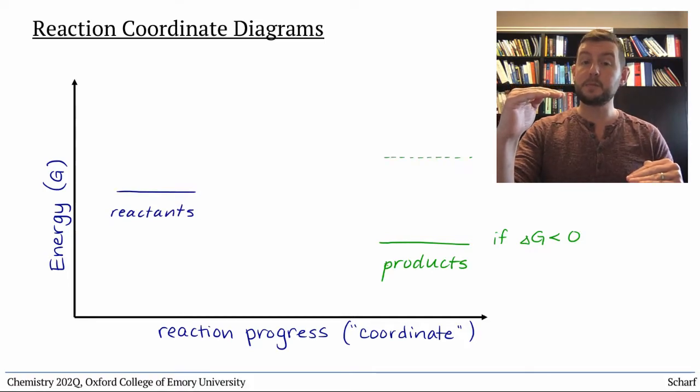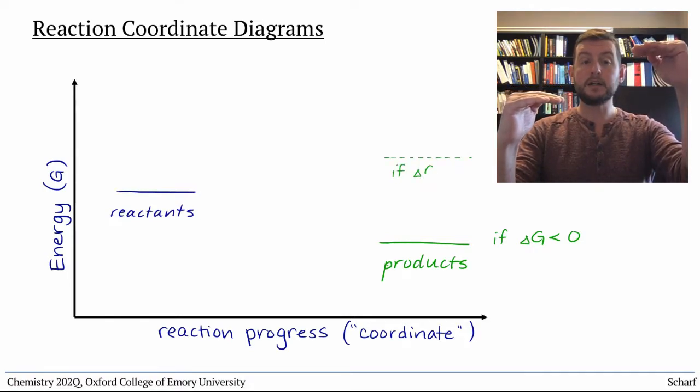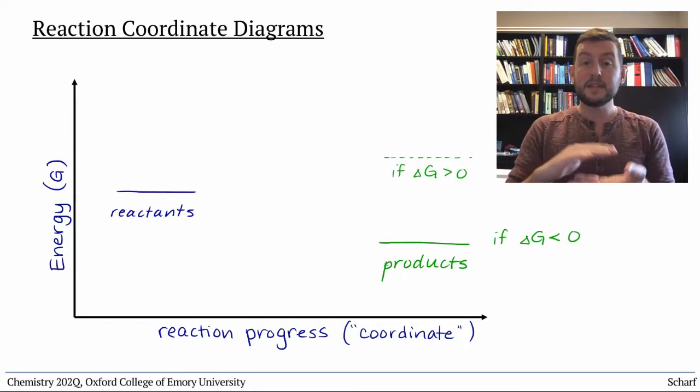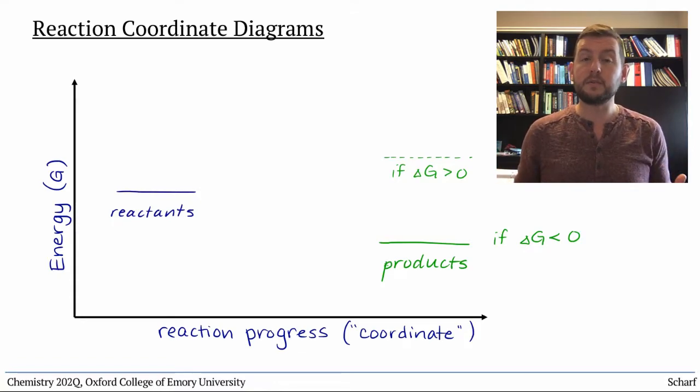If delta G is positive, then the products are higher in energy or less stable than the reactants. The size of delta G tells you how spontaneous, or how large, the driving force of the reaction is.